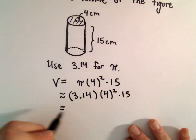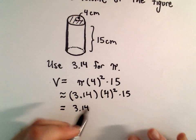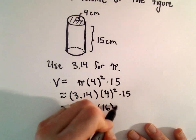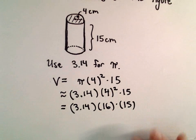So now, just a little bit of arithmetic. So 3.14, 4 squared will be 16, and then we have to multiply that by 15.